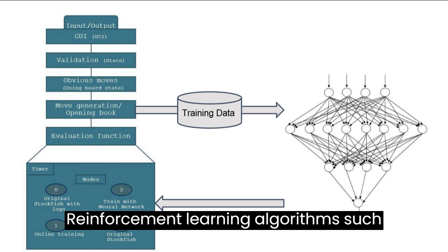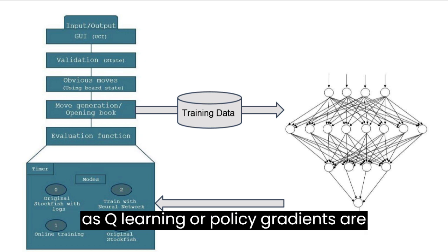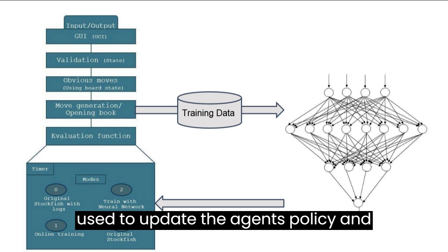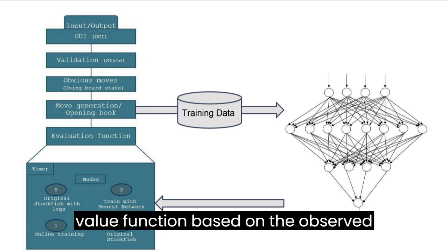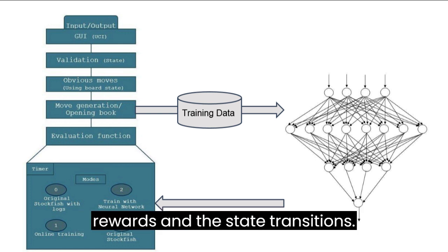Reinforcement learning algorithms, such as Q-learning or policy gradients, are used to update the agent's policy and value function based on the observed rewards and the state transitions.